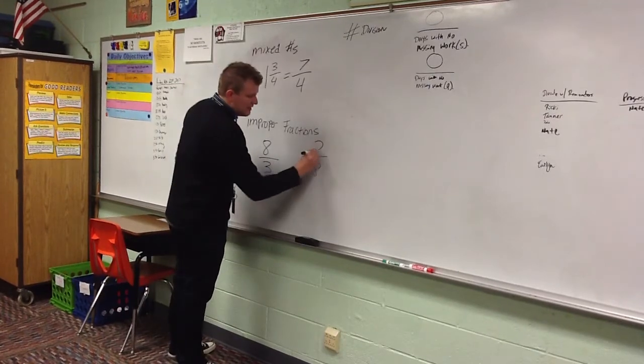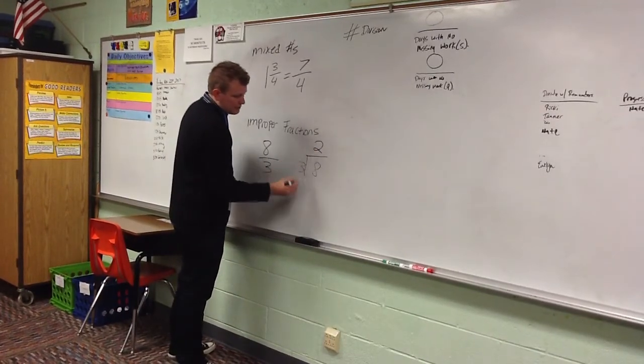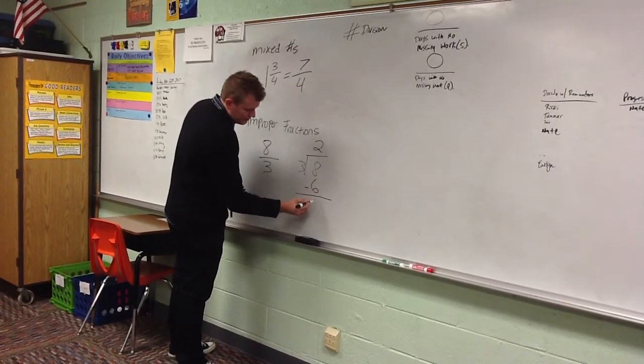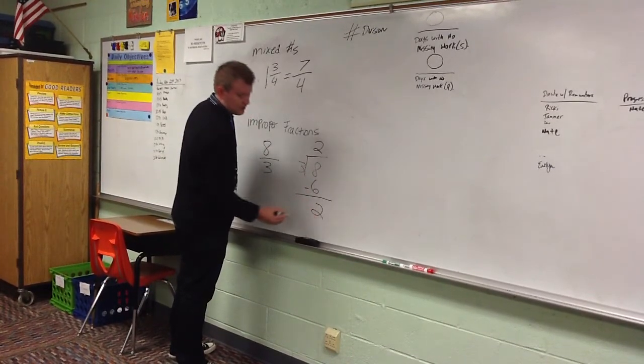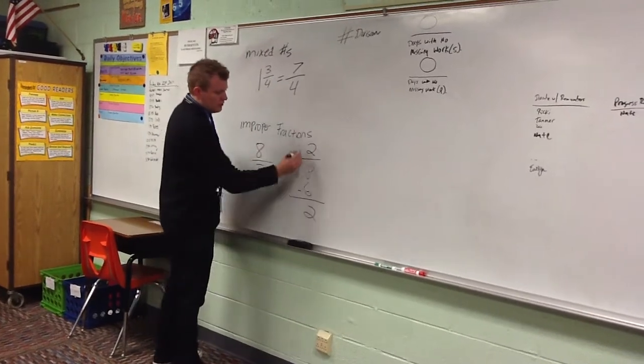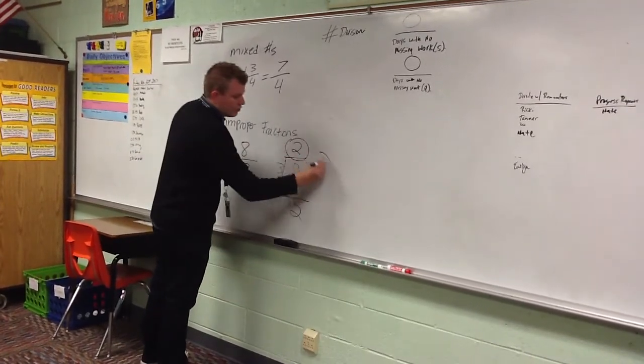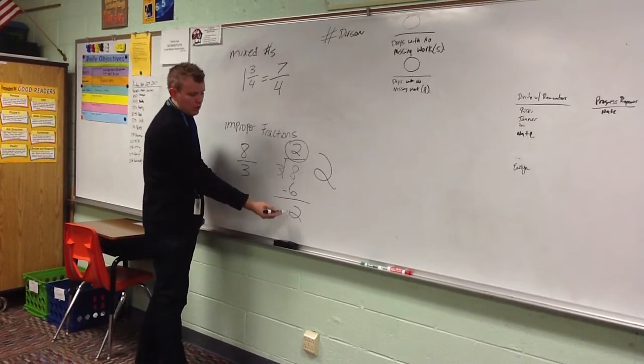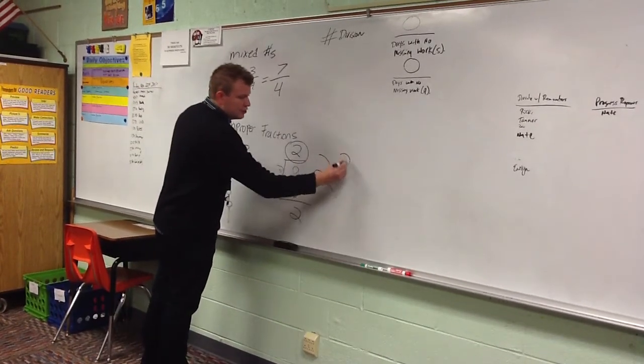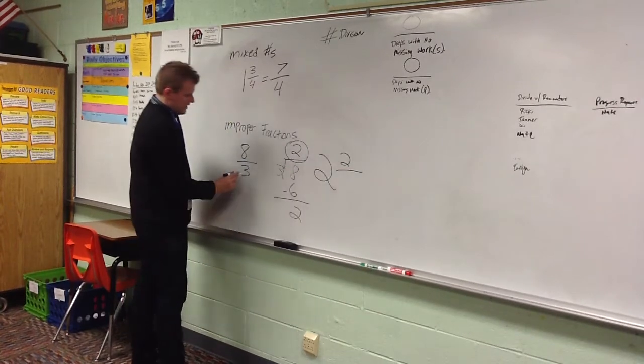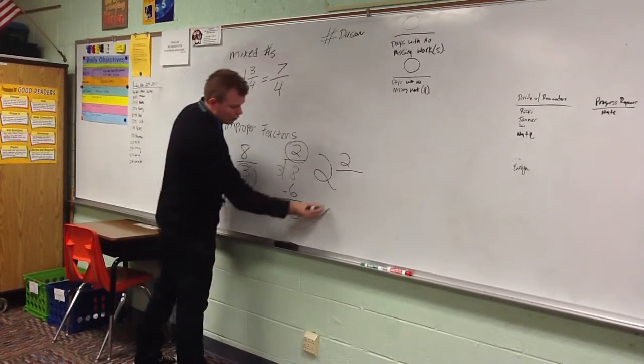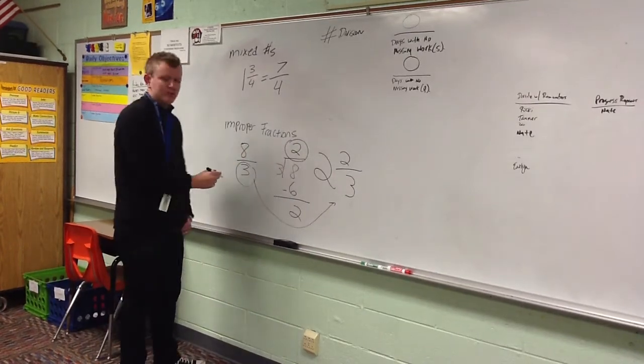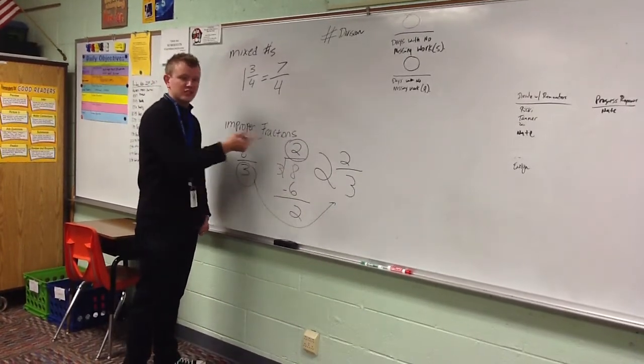Three, six. I'm going to put the two up top. Two times three is six. Eight minus two is two. Took me a little bit too long. Two, the number up top, becomes our whole number. The number we have left down below, or what would be our remainder, becomes the new numerator. And then the denominator stays the same. So, eight thirds is really the same as two and two thirds. Two wholes and two thirds left over.